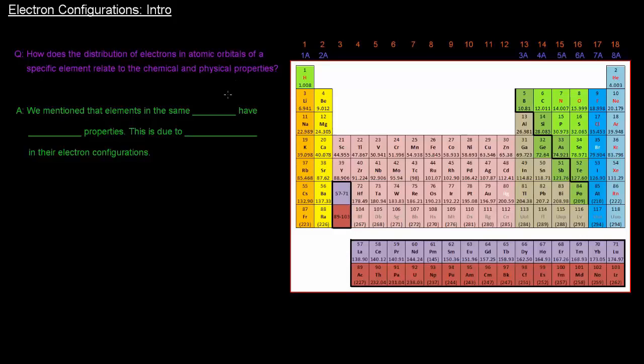So electron configurations, what do they do? Well, let's think about this question first. How does the distribution of electrons and atomic orbitals of a specific element relate to the chemical and physical properties of that element? Well, before, we mentioned that elements in the same group have similar properties.